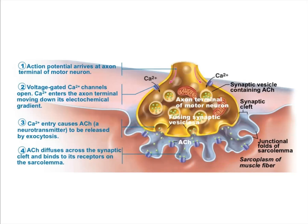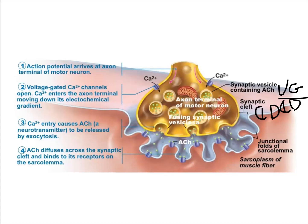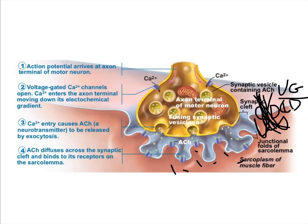The next step: if enough sodium gets in and diffuses away from the junction, we have voltage-gated sodium channels in the sarcolemma a bit further out. These respond to a change in voltage — that's the threshold we were talking about. Enough sodium comes in, these channels hit threshold, and even more sodium comes through. That triggers a positive feedback mechanism: sodium comes through one channel, opening the next one, and on and on it goes.